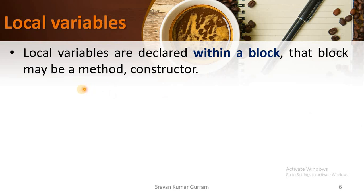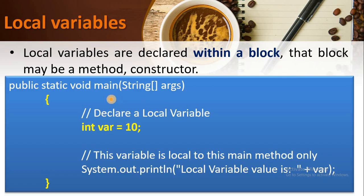Now let us start our discussion about local variables. Local variables are declared within a block. That block may be a method or a constructor. Here I am taking a main method — main is also a method, of course it is a special method. We will use the main method for our examples since we haven't discussed user-defined methods yet, but we have already covered the main method in our previous videos.